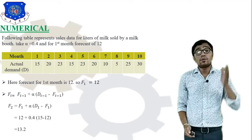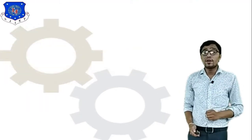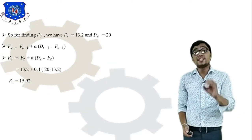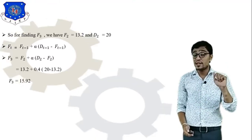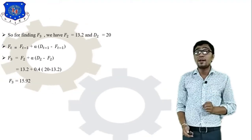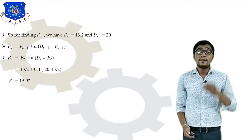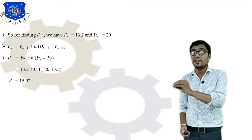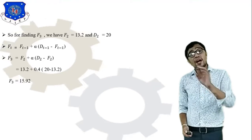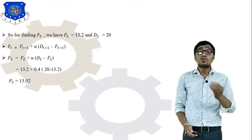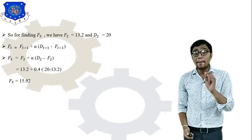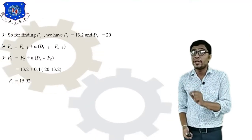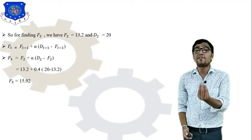Similarly, to find F3 we have F2 = 13.2 and from the table D2 = 20. The equation is F3 = F2 + α × (D2 − F2). So F3 = 13.2 + 0.4 × (20 − 13.2) = 15.92.